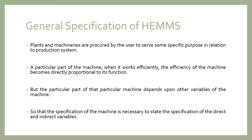Plants and machineries are procured by the user to serve some specific purpose in relation to the production system. When a particular part of the machine works efficiently, the efficiency of the machine becomes directly proportional to its function. The performance of that part depends upon other variables, so the specification of the machine is necessary to state the direct and indirect variables.